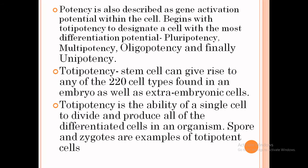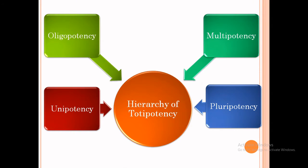Totipotent stem cells can give rise to any of the 220 cell types found in an embryo as well as extra-embryonic cells. Totipotency is the ability of a single cell to divide and produce all of the differentiated cells in an organism. The spore and zygote are examples of totipotent cells. This is the diagram of the hierarchy of totipotency — it can differentiate into the pluripotent cell, multipotent cell, oligopotent cell, and unipotent cell.